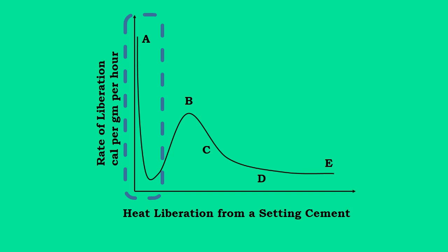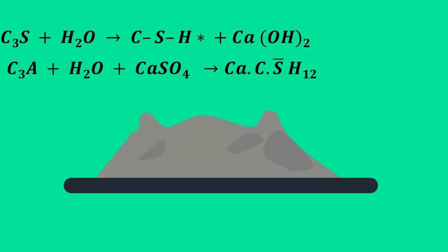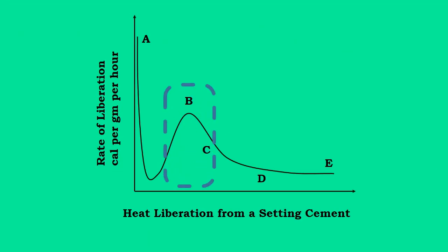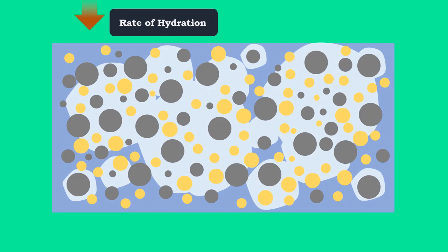After a while, the initial heat evolution ceases quickly when the solubility of aluminate is depressed by gypsum, which is represented by the descending peak a. The next heat evolution is due to the formation of ettringite and also due to the reaction of c3s, which is represented by the ascending peak b.